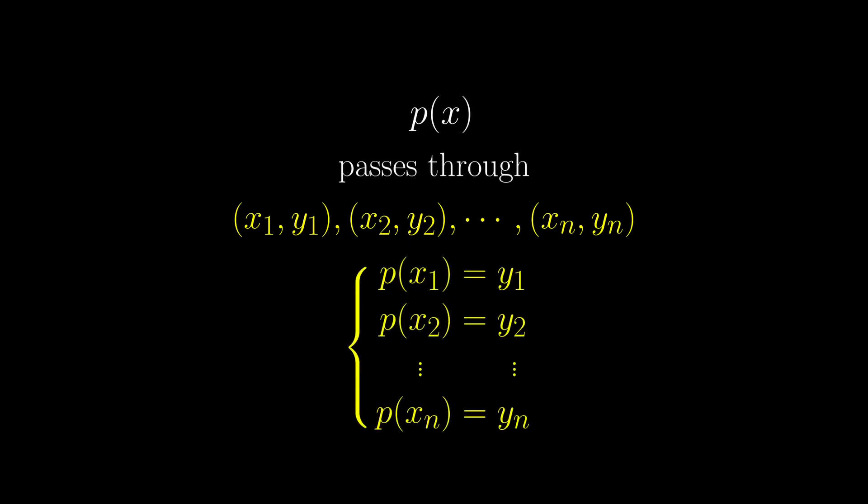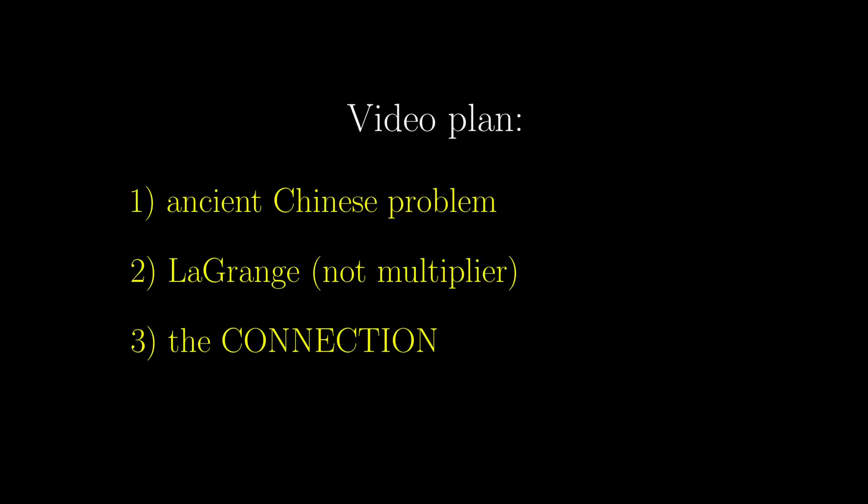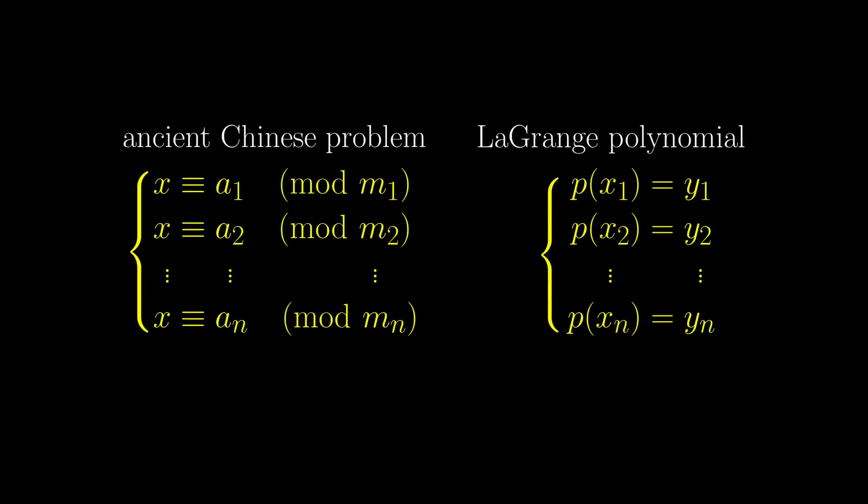So let's say p(x) is the required polynomial, which passes through the points x1, y1, all the way to xn, yn. That means we have a system of equations like so. This monstrosity looks quite familiar, don't you think? Enough with the procrastination, we now have more problems to deal with.